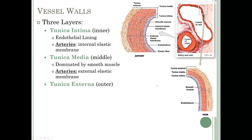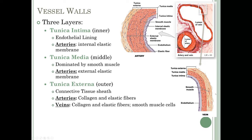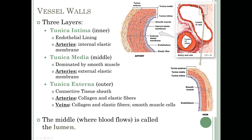The final layer, shown in a beige color, is the tunica externa — essentially a connective tissue sheath surrounding the vessel. In arteries, it's made up of collagen and elastic fibers, shown by little squiggly lines. In veins, it's made up of collagen and elastic fibers, but you can also find some smooth muscle cells interspersed throughout. The middle of both vessels is called the lumen — the hole where blood flows.